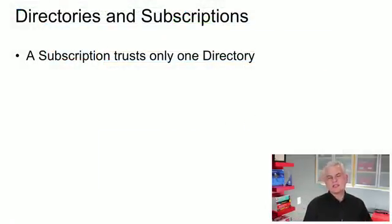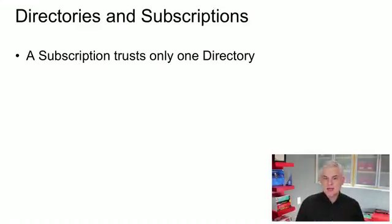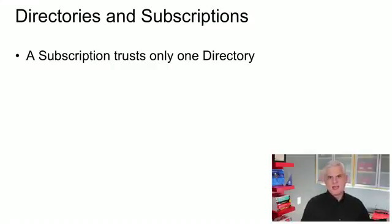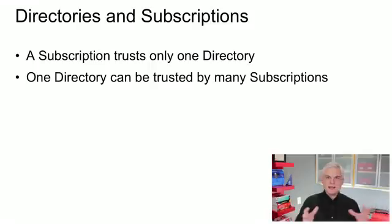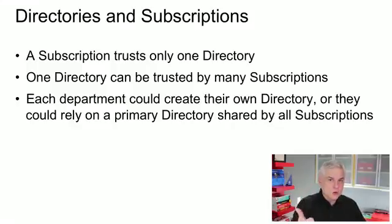Let's talk about how a directory is associated with a subscription. An Azure subscription trusts only one directory — it will rely on only one directory for all of its authentication and authorization needs. Each department within an organization could have its own Azure Active Directory with just the users for that department, or all departments could be combined into a single directory containing all users. A subscription trusts only one directory, but one directory could be trusted by many different subscriptions.